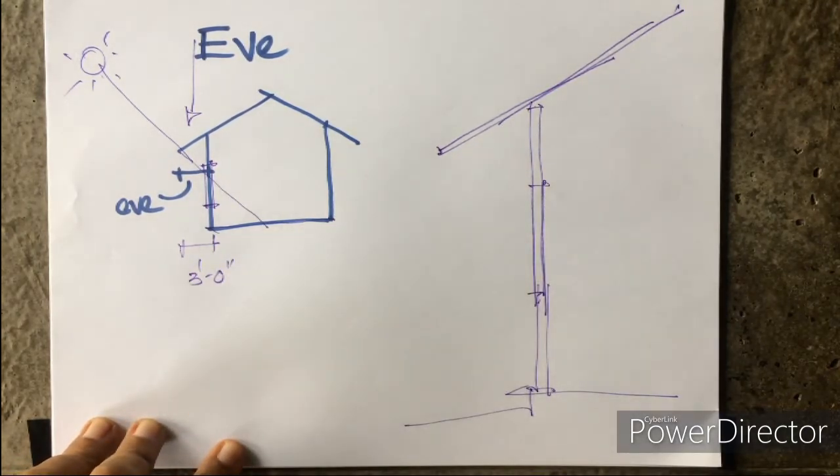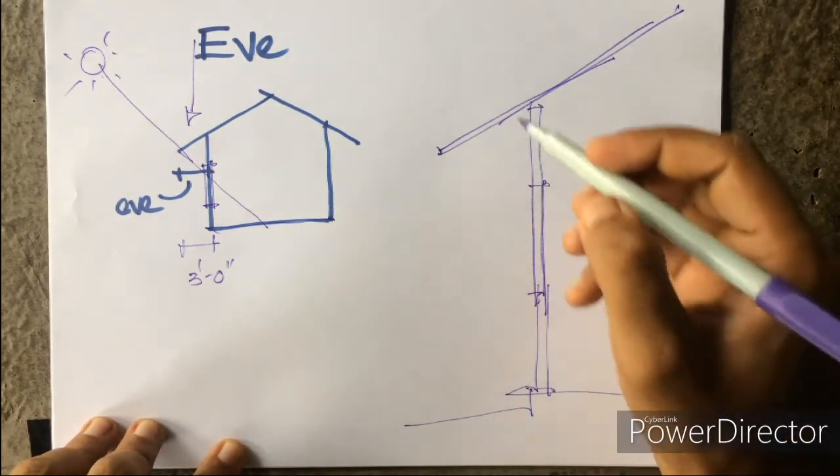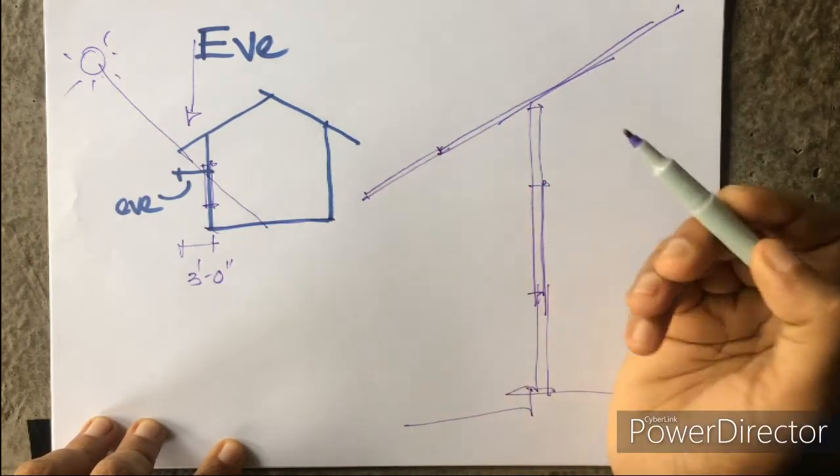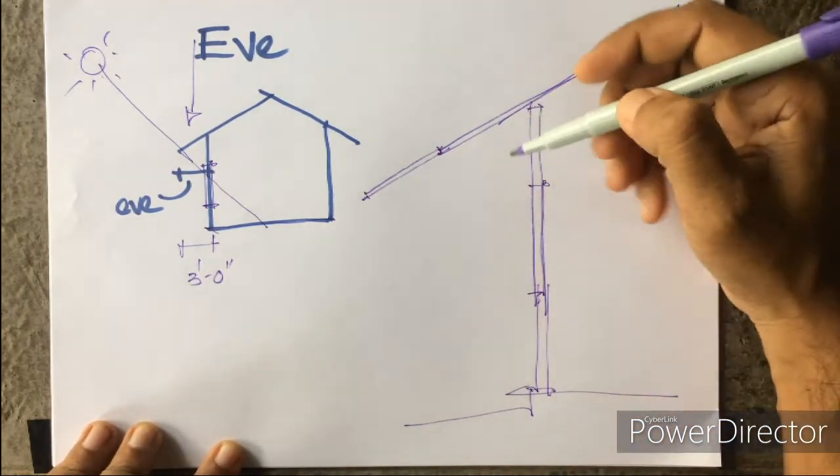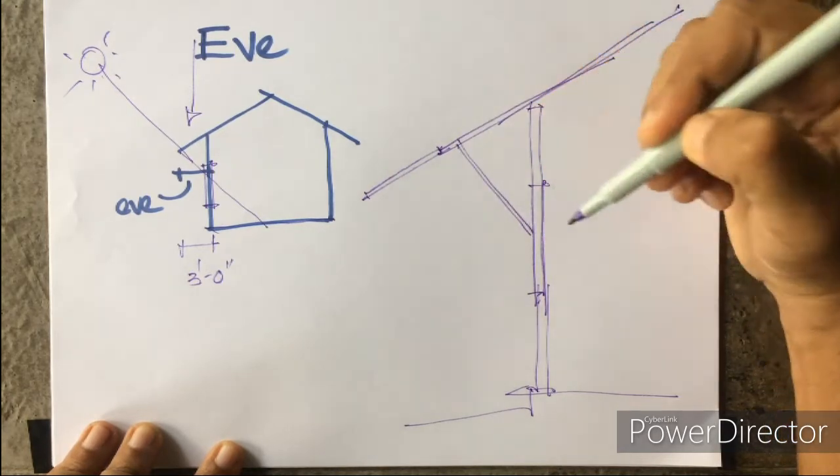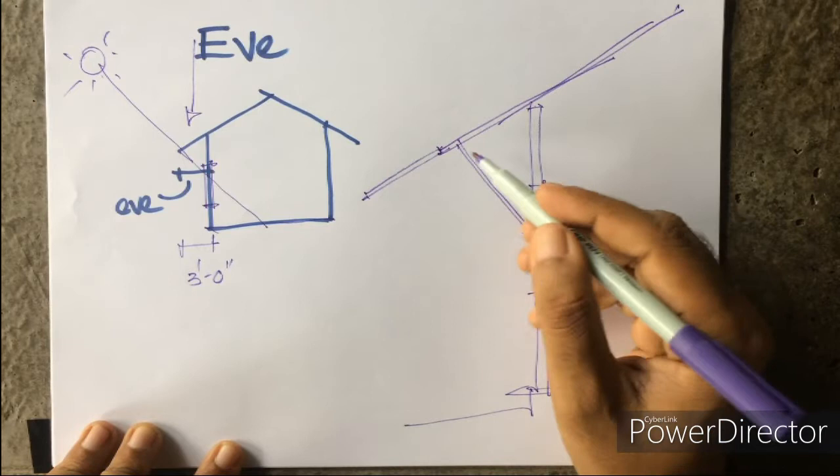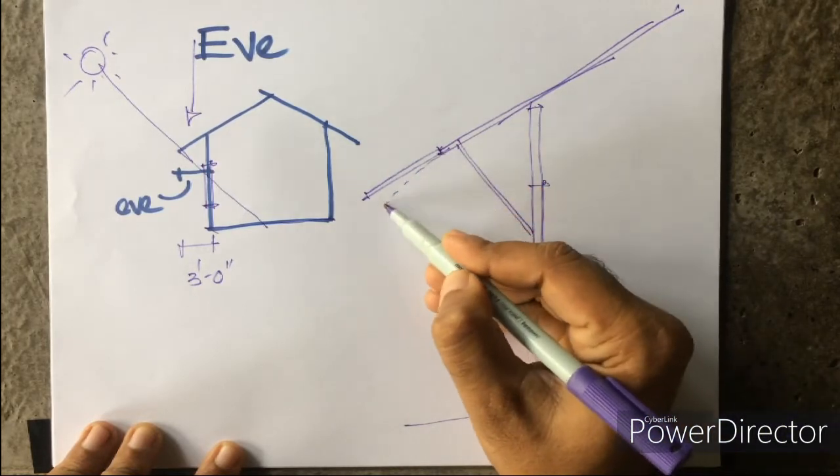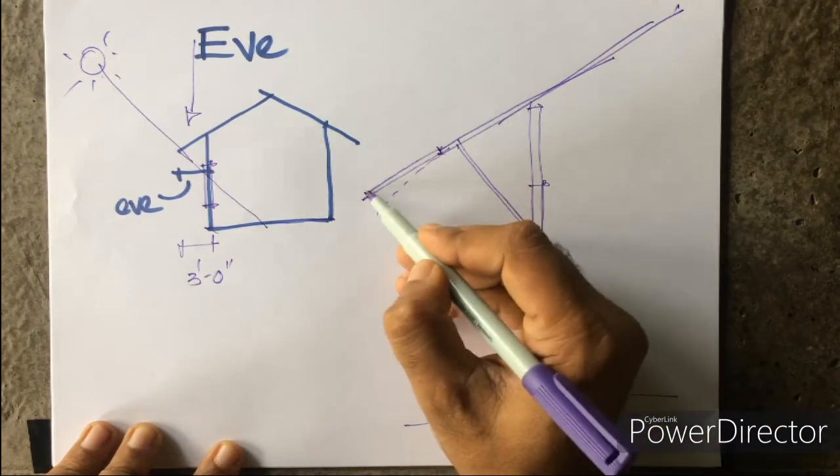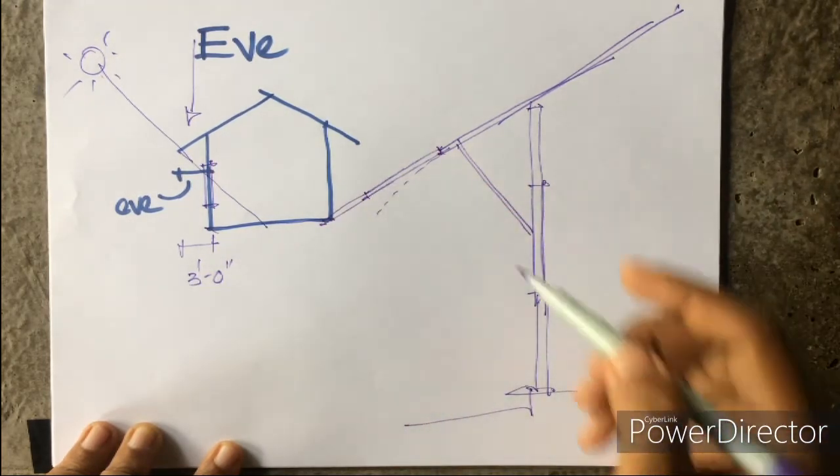The greater the eve, you get more protection. Generally, the eve is three feet. That's practically what you can do with the timber you have, and three feet is generally enough. If you go more than three feet, structurally you need to prop it, otherwise it won't stay—it will bend like this if there's no prop.